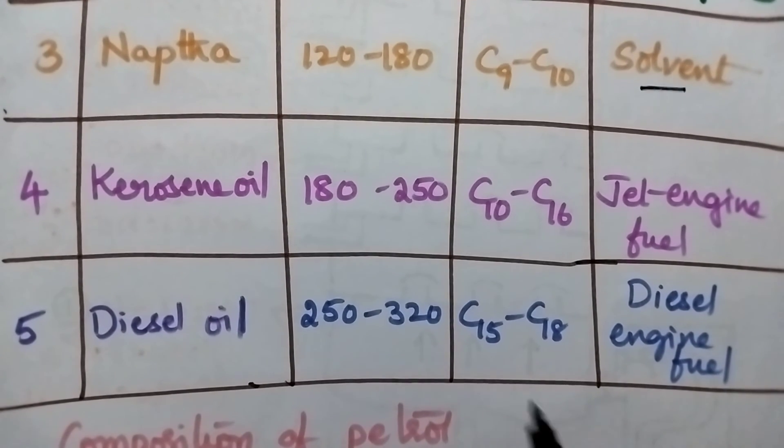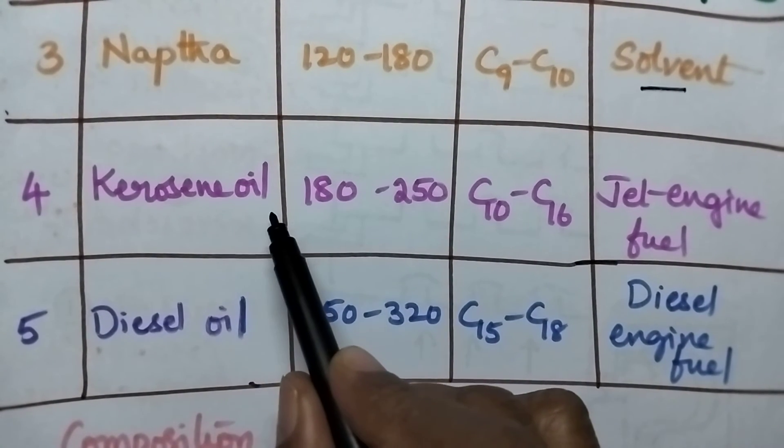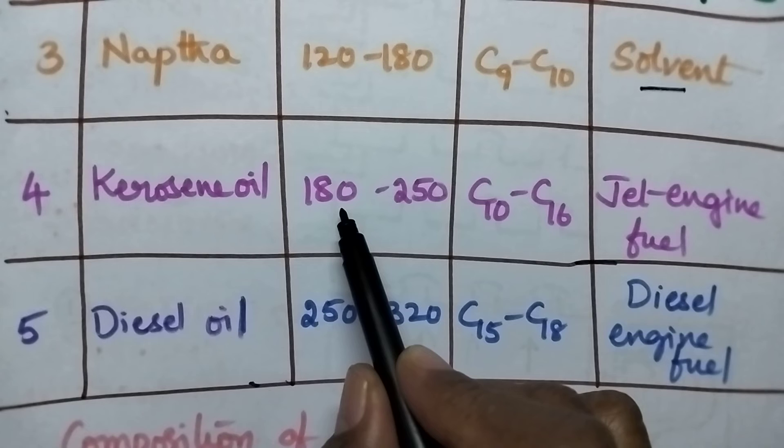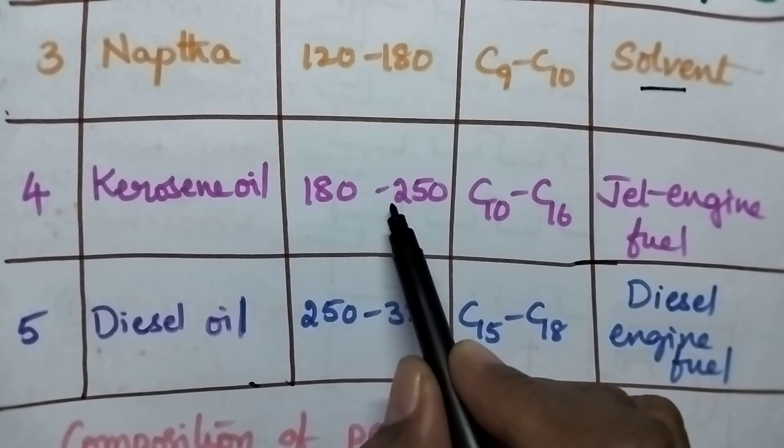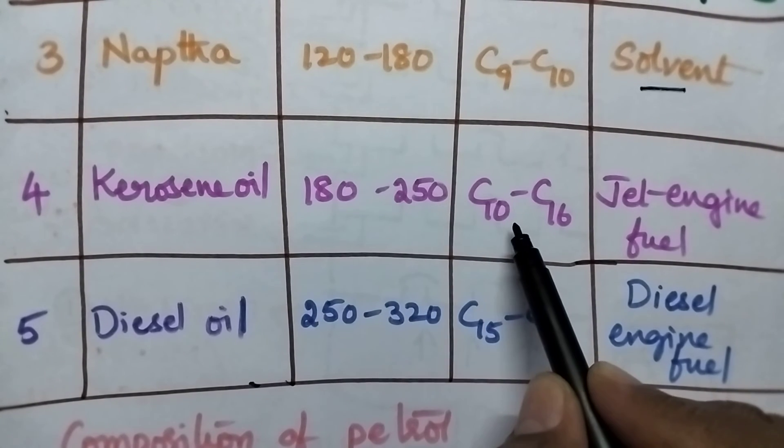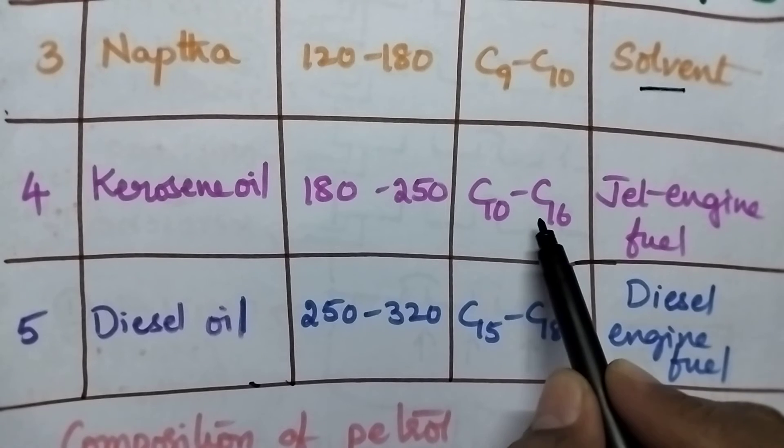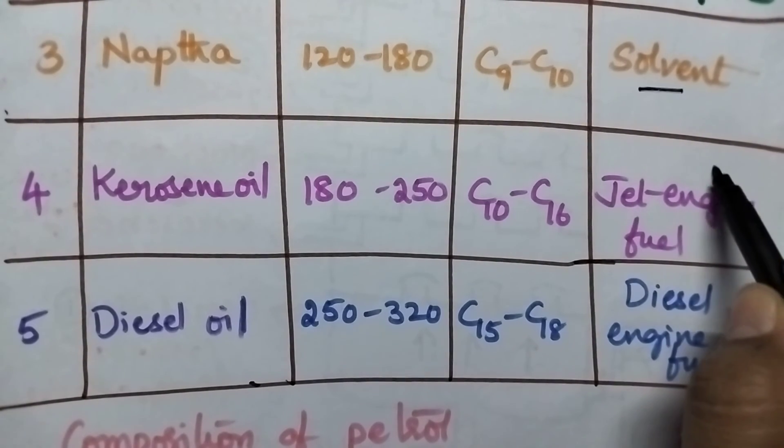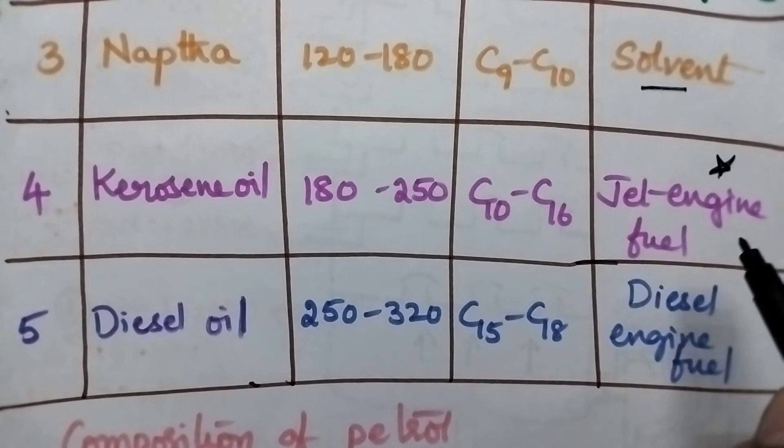The fourth fraction is kerosene oil. Its boiling point is maintained from 180 to 250 degree centigrade. Here the composition varies from C10 to C16. It is the most important jet engine fuel.